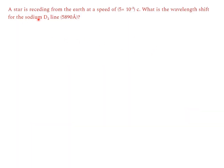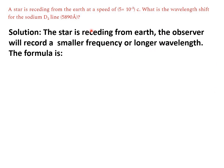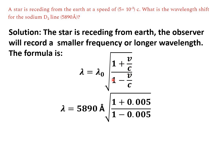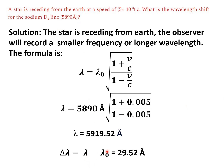Example 1: A star is receding from Earth with velocity v = 3.5 × 10⁻³ c. Find the wavelength shift for the sodium D2 line with λ₀ = 5890 Å. Since the star is moving away, the observer records a longer wavelength. Using λ = λ₀ · √[(1 + β)/(1 − β)] with β = 0.005, we calculate λ = 5890 · √[(1.005)/(0.995)] = 5919.52 Å. Therefore Δλ = 5919.52 − 5890 = 29.52 Å.